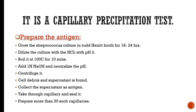Lancefield grouping uses a capillary precipitation test. To prepare the antigen: grow the culture of Streptococcus in Todd-Hewitt broth for 18 to 24 hours, then dilute the culture with HCl at pH 2, and boil at 100 degrees Celsius for 10 minutes.